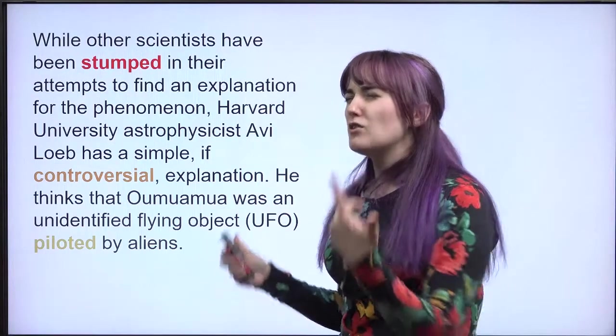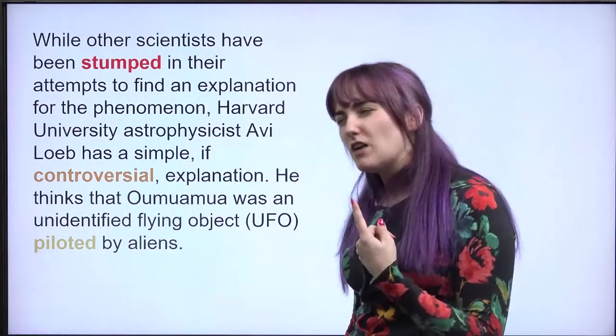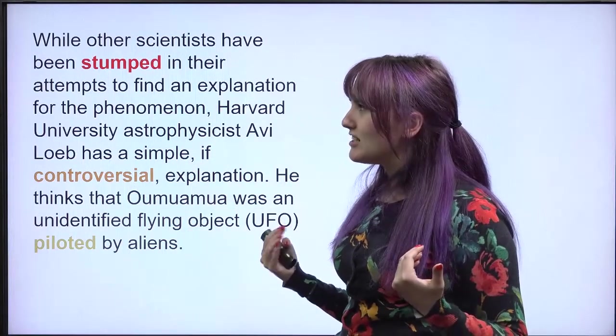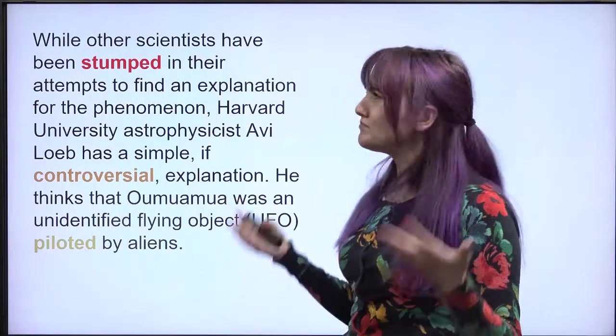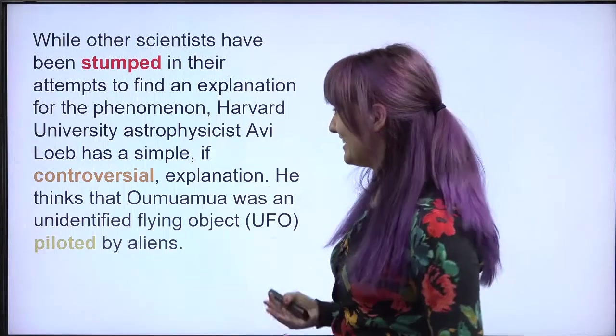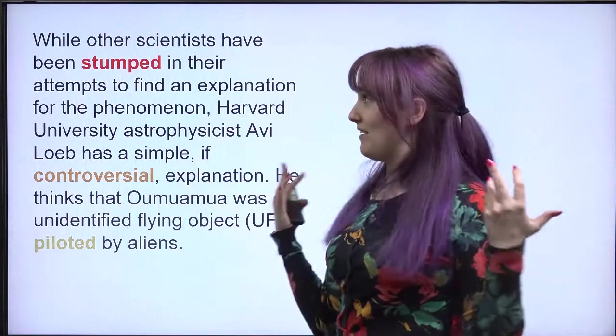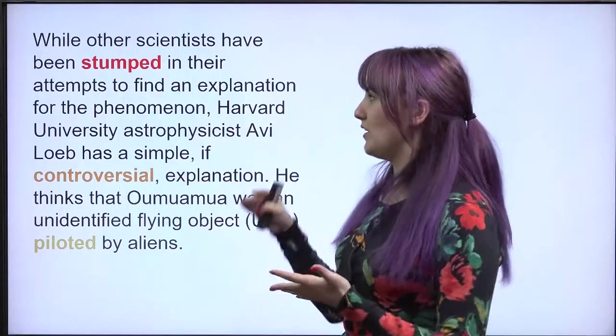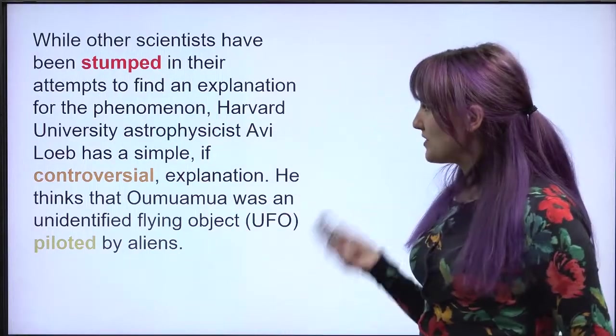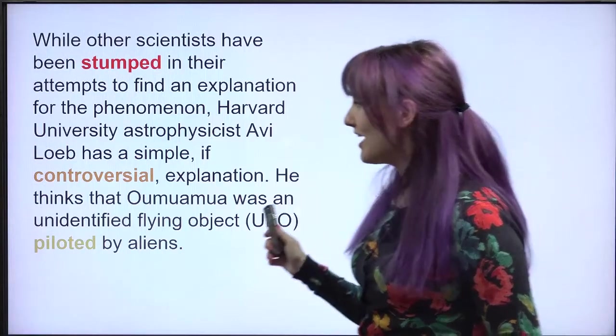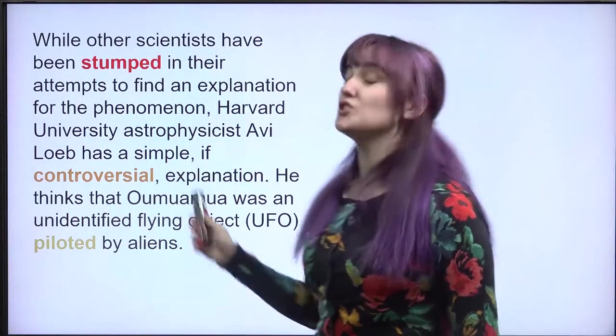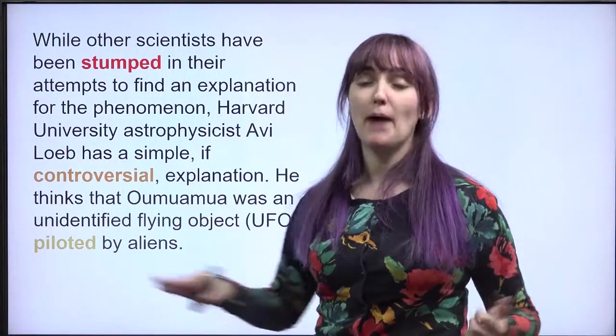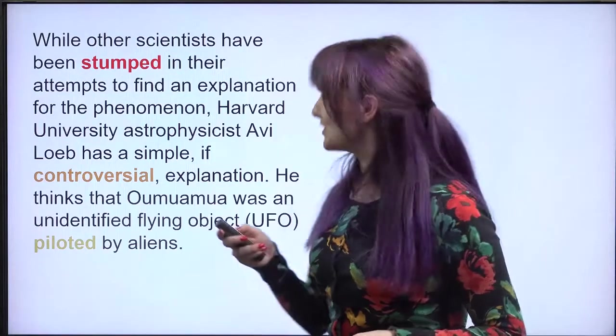So other scientists, when they looked at this thing, the shape means it's not a comet and it's not an asteroid, but the reflectivity, the amount of light that's shining back at us, it's also 10 times higher than regular space rocks. So what is this thing made of? We don't know. And then in addition to that, it's much heavier than what we think that it's made out of. So they're having a difficult time, they're stumped, they don't know how to find an explanation for this phenomenon. However, this guy at Harvard University astrophysicist Avi Loeb has a controversial explanation. When something is controversial, it means that a lot of people don't agree about it. Avi Loeb has said that he thinks it's a UFO piloted or flown by aliens, but a lot of people seem to not really agree with him.